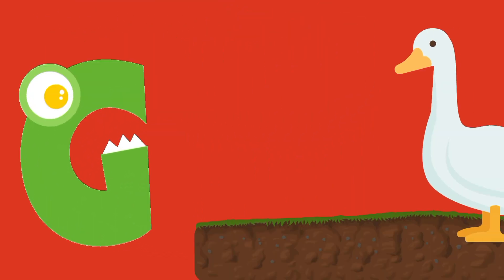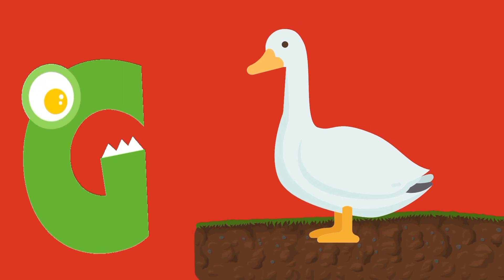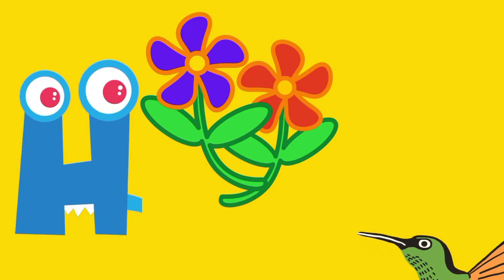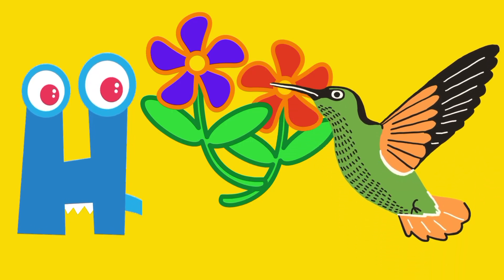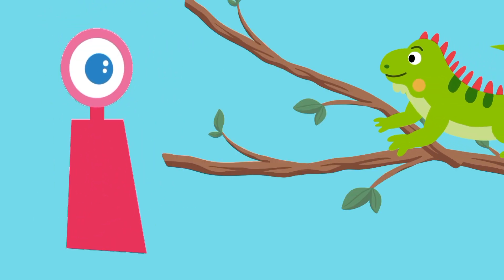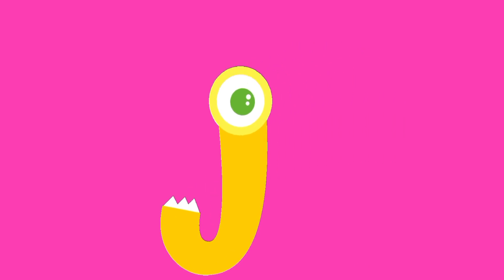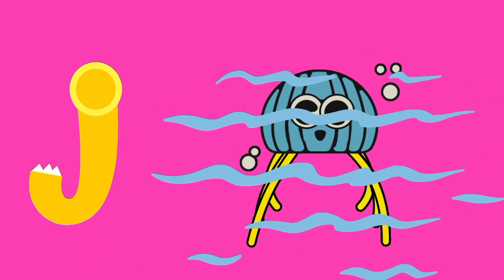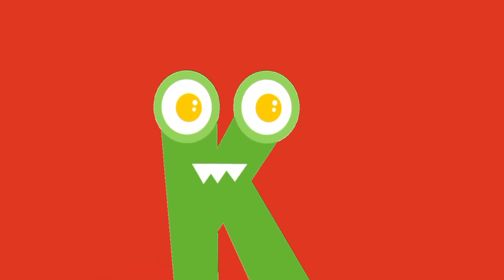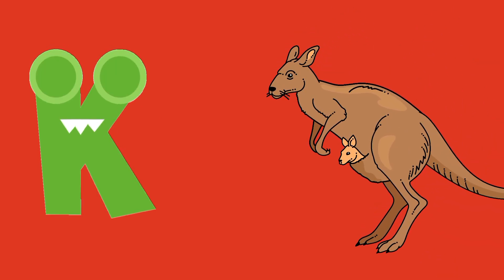G. G for Goose. H. H for Hummingbird. I. I for Iguana. J. J for Jellyfish. K. K for Kangaroo.